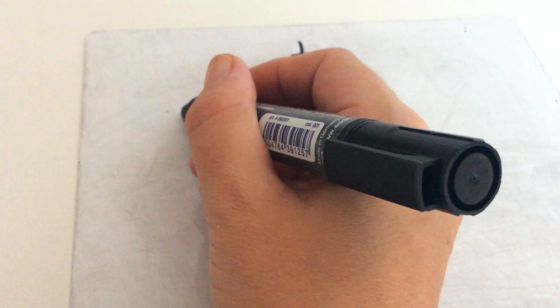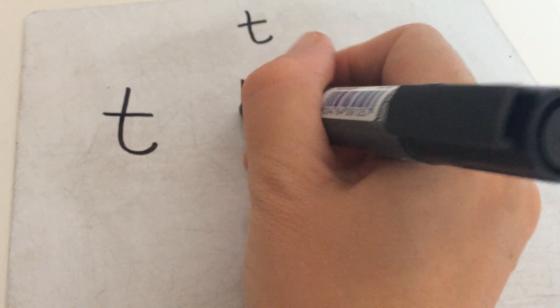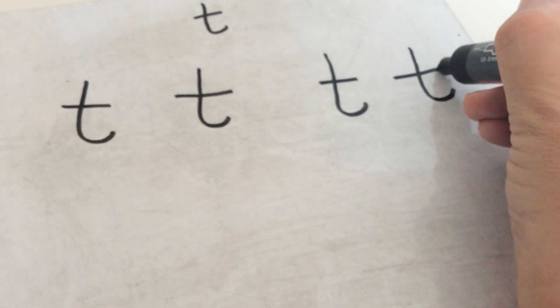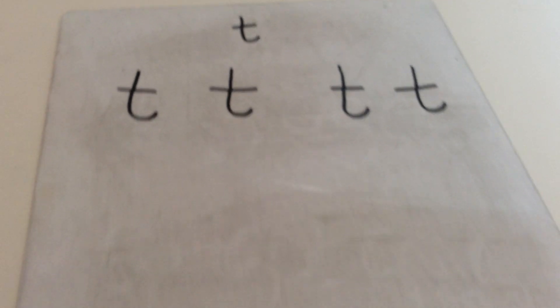So we're going to do T now, the letter T. So we're going to start at the top, we're going to come down his back and curl round and then cross through. So down his back, curl round, cross through. Down his back, curl round, cross through. Down his back, curl round, cross through. Okay, so the letter T, the T sound.